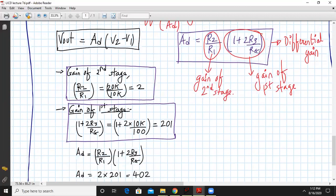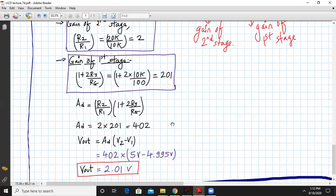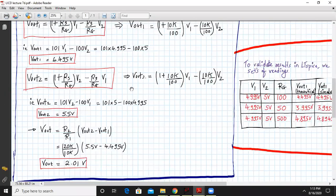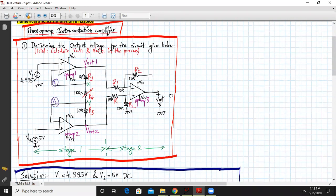Gain of the second stage is R2/R1 which is 20k/10k and that is 2. Gain of the first stage is 1 + 2R3/Rg, that is 1 + 2×10k/100 which comes out to be 201. The differential voltage gain is 402. Substitute the values of V2 and V1 as 5 and 4.995, you will get the same result, 2.01 volts. These are two techniques we can use depending upon the question asked.